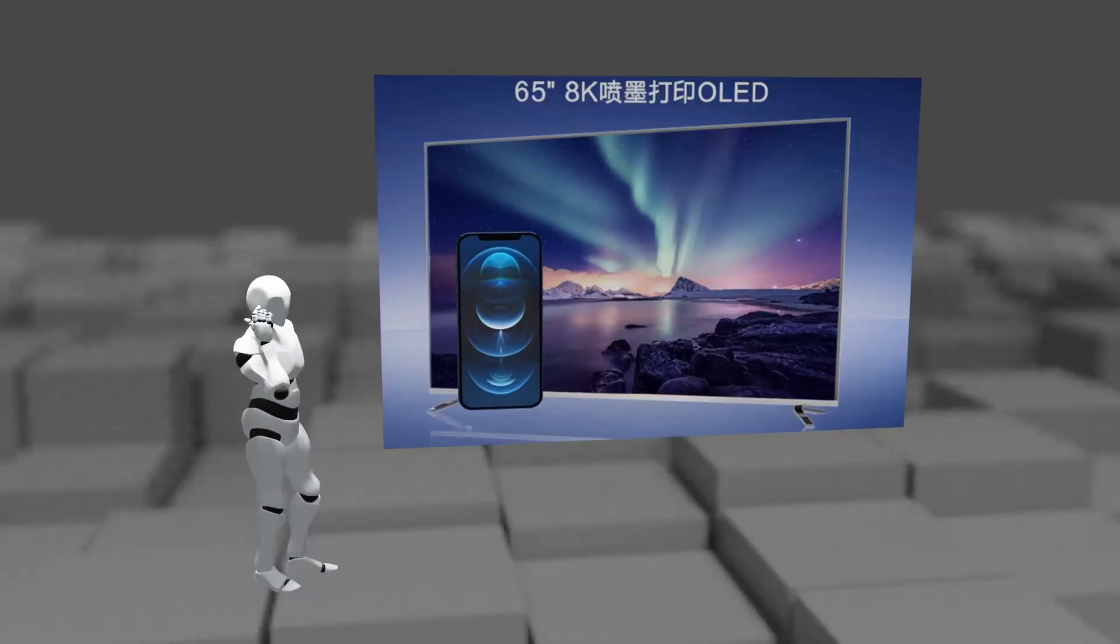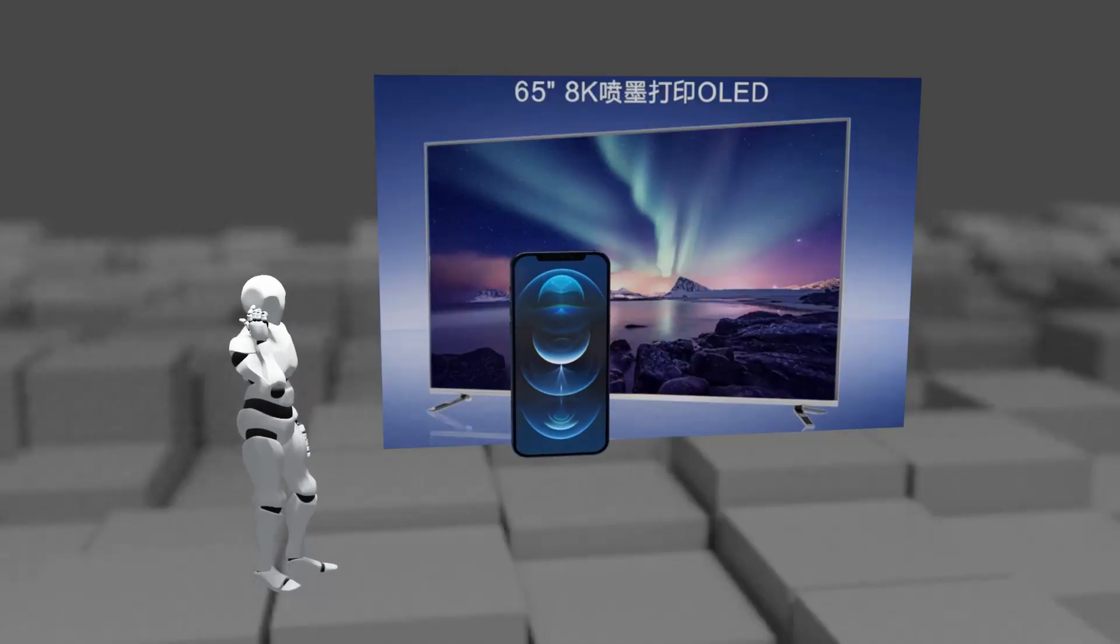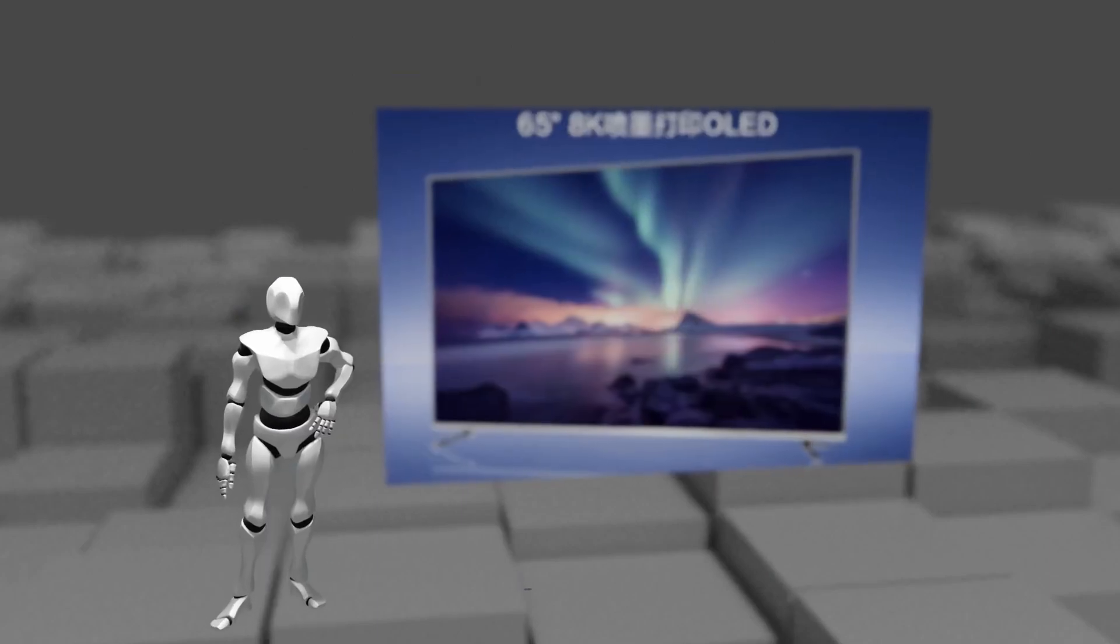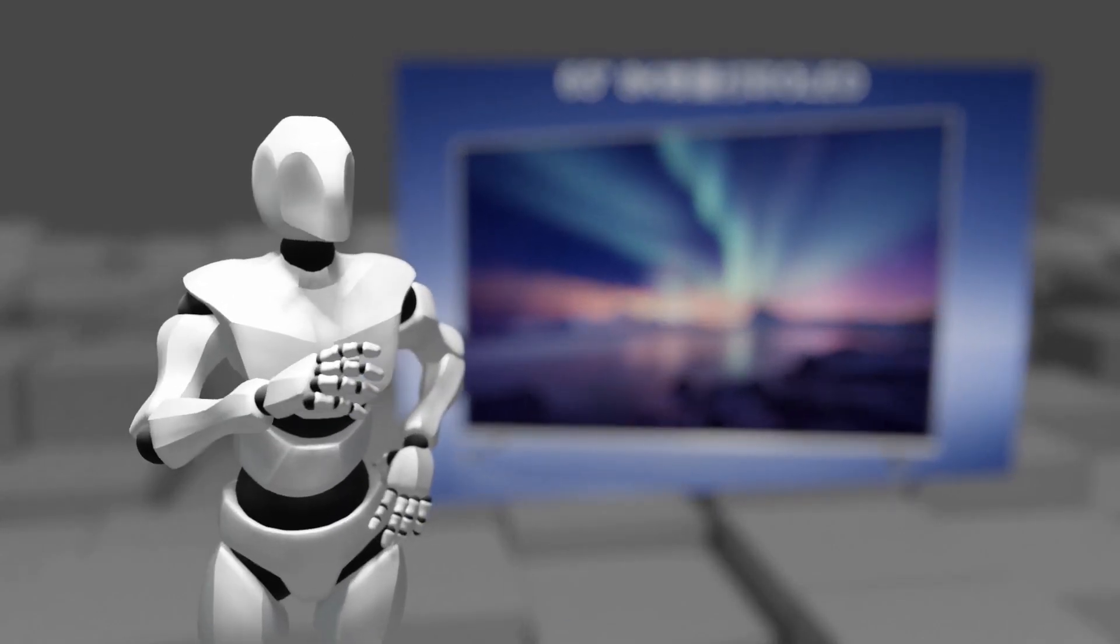Is it really possible to produce an OLED TV that requires far superior durability compared to mobile phones with a relatively simple printing method? And can the printing method threaten the existing OLED TV?